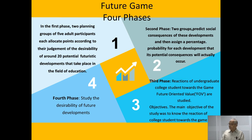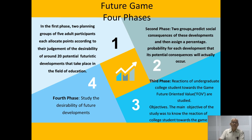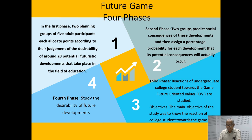We go for future games in this process. Future games can be organized in four stages. The first phase involves two planning groups of five to six adult participants like teachers and teacher educators. Each group is allocated one point according to their own expectations, judgment, and desirability, and they develop around 20 to 25 potential future developments through their exercises and activities in the context of education.